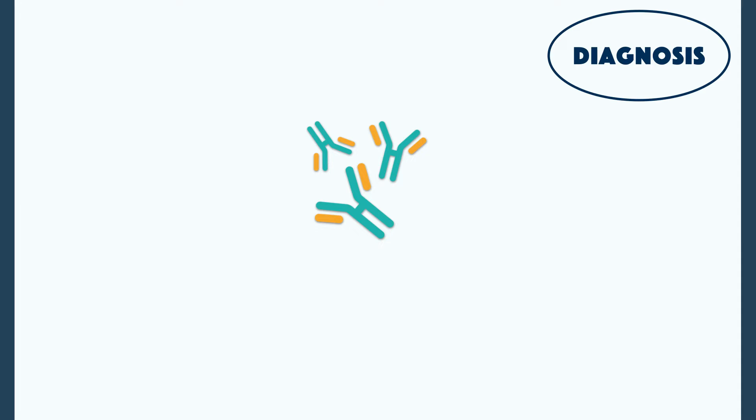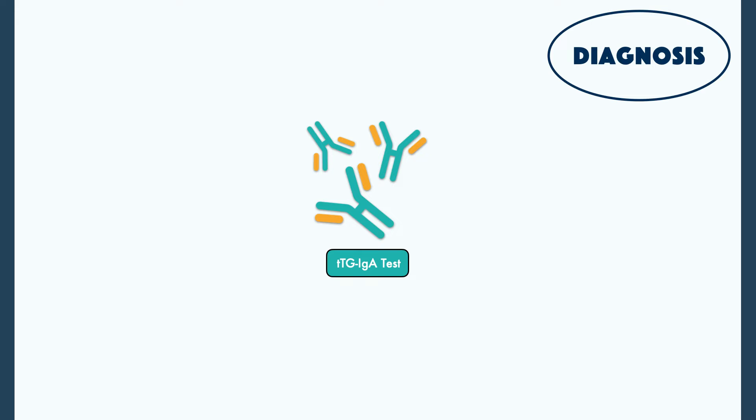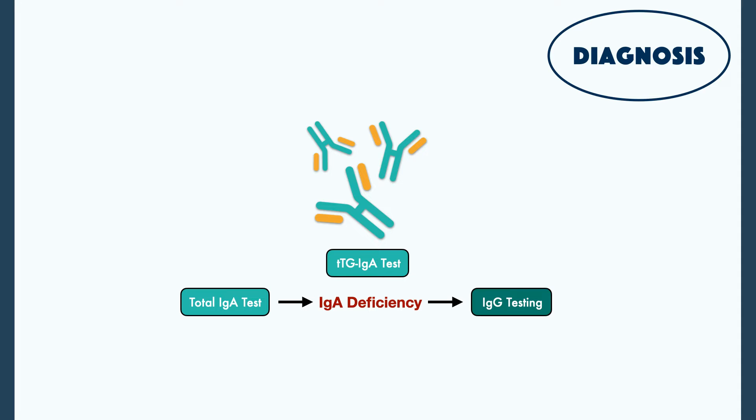The first line of testing is the antibody test. The preferred test is the tissue transglutaminase antibodies test, or TTG-IGA test. This is often taken alongside a total IgA test because some patients have IgA deficiency and will produce a false negative with a TTG-IGA test. These patients can be tested for IgG antibodies, which is not quite as accurate as the IgA test, but can still provide clues if they're the best option available.